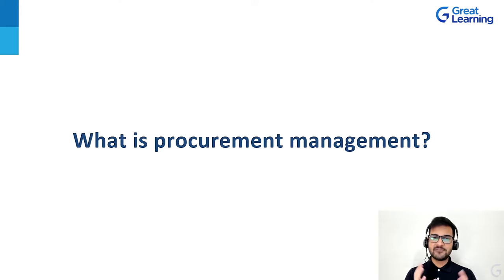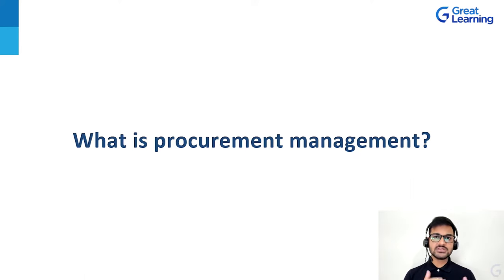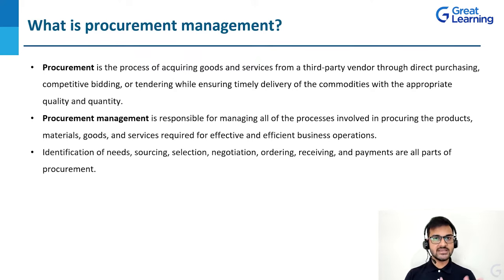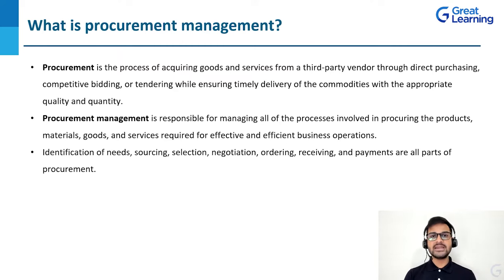Let's start by clearly understanding what exactly is procurement management. Procurement is the process of acquiring goods and services from a third-party vendor through direct purchasing, competitive bidding, or tendering, while ensuring timely delivery of the commodities or products with the appropriate quality and quantity. In very simple words, procurement is acquiring goods or services from a third-party vendor.